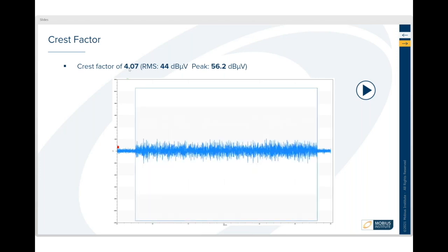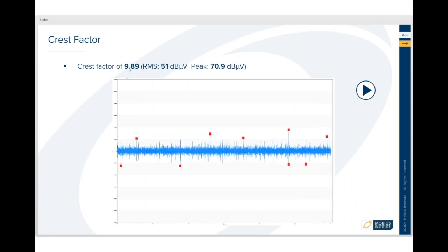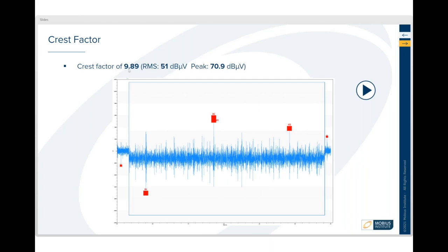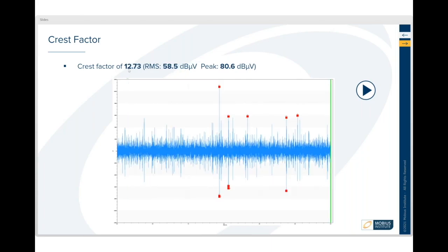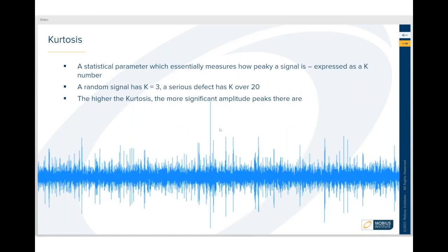But as there are more spikes, you can see the RMS—if you just keep an eye on the peak and the RMS—you can see how the crest factor, which is a ratio, is changing. You can see there are more spikes there, and then the crest factor is higher again as there are more spikes. So it is a good measure to use.